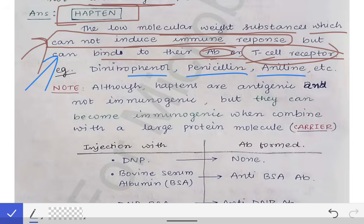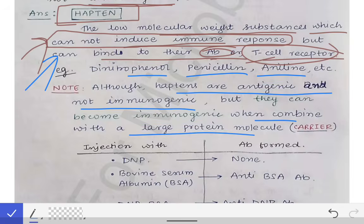One important thing to note is that although all haptens are antigenic and not immunogenic, they can become immunogenic when they combine with larger protein molecules. Those larger protein molecules are called the carrier. So whenever a protein molecule is conjugated with a hapten, that makes the hapten immunogenic, and that protein molecule is called the carrier.